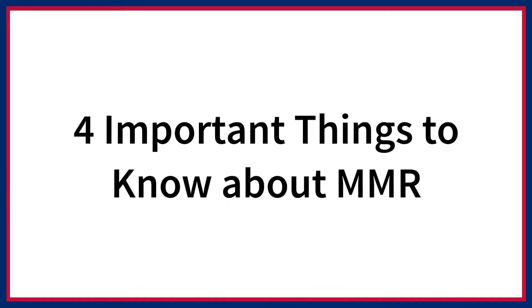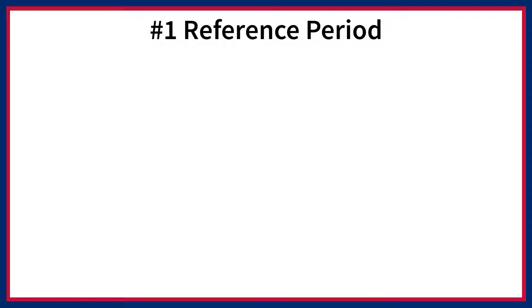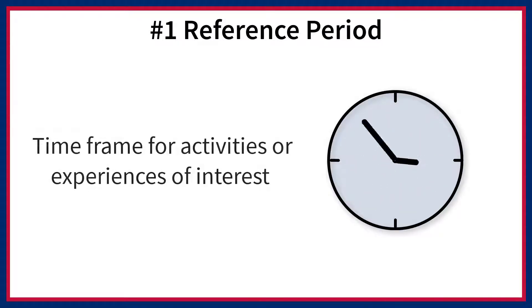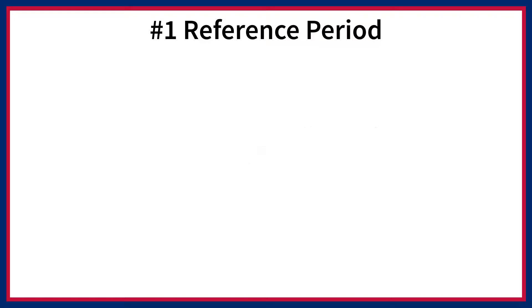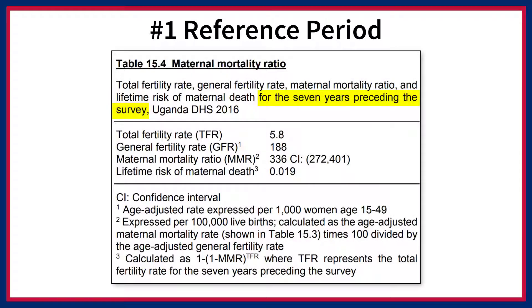There are four important things to know about the maternal mortality ratio. First, the maternal mortality ratio has a reference period — the time frame for which survey respondents are asked to report activities or experiences of interest. The MMR often examines maternal deaths in the seven-year period before the survey, though some DHS surveys have used other reference periods. The reference period will be stated in the final report table presenting MMR estimates.